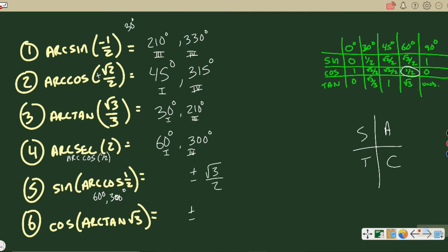Sine of 300, it's again a reference angle of 60, and so it means you look at the chart, root 3 over 2, but in quadrant four, it's negative. So that's why we get positive and negative for all of these answers. Always going to happen.